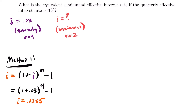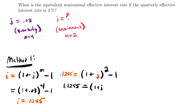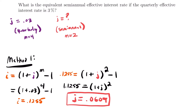Now we can use this annual rate to convert to a semi-annual rate. Our formula is: I equals (1 plus J) to the power of M, minus 1. M is 2 here since J is semi-annual. Plugging in I = 0.1255, we get 1.1255 equals (1 plus J) squared. Taking the square root of both sides and subtracting 1, we find that J equals 0.0609 — that's our semi-annual rate given the quarterly rate we started with.